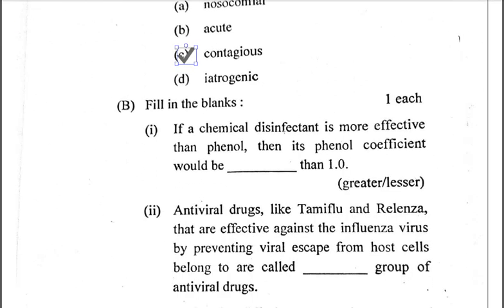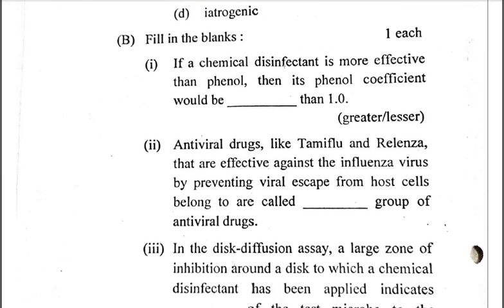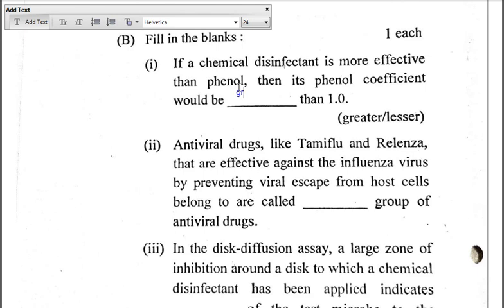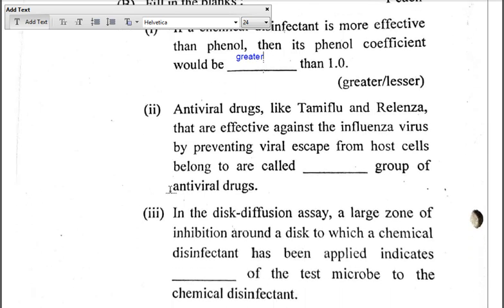Next is Part B, fill in the blanks — each blank again carries one mark. Part one: If a chemical disinfectant is more effective than phenol, then its phenol coefficient would be dash than one; the options are 'greater' or 'lesser.' The correct answer is greater. Part two: Antiviral drugs like Tamiflu and Relenza that are effective against the influenza virus act by preventing viral escape from host cells and belong to the class called the dash group of antiviral drugs.